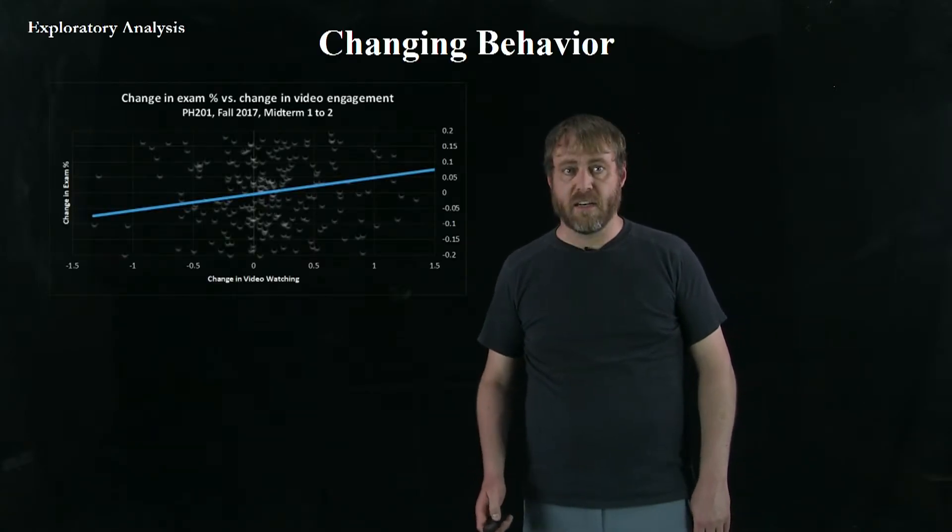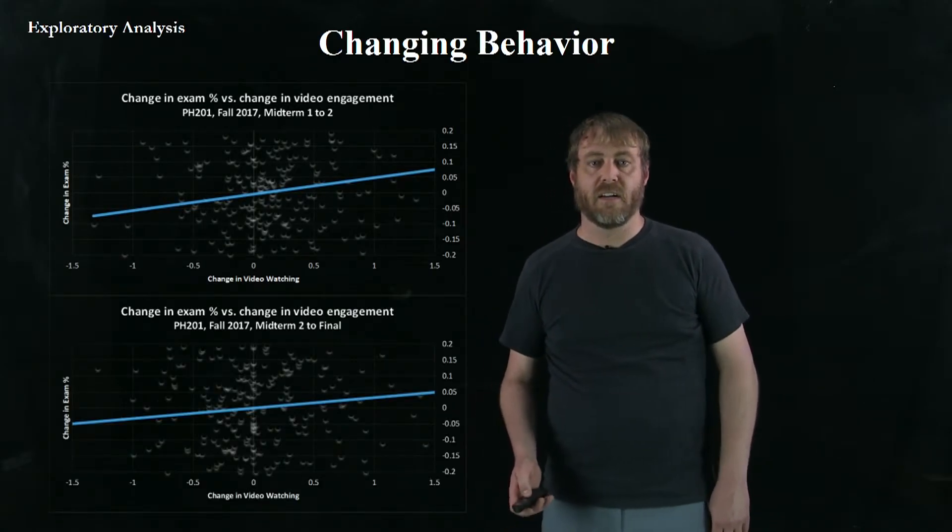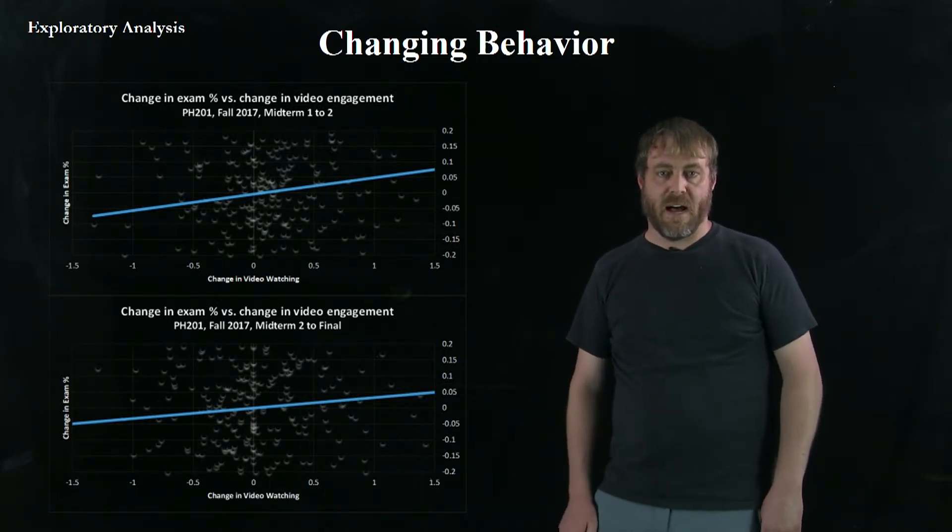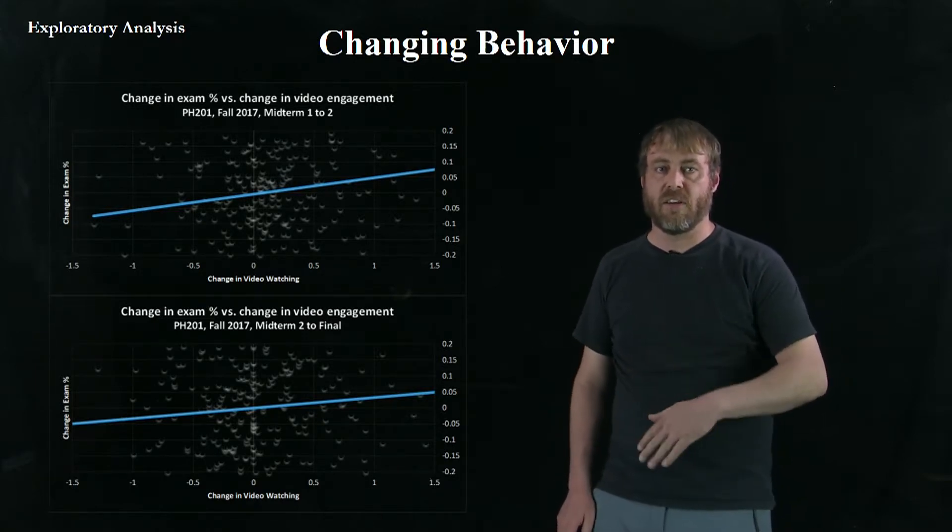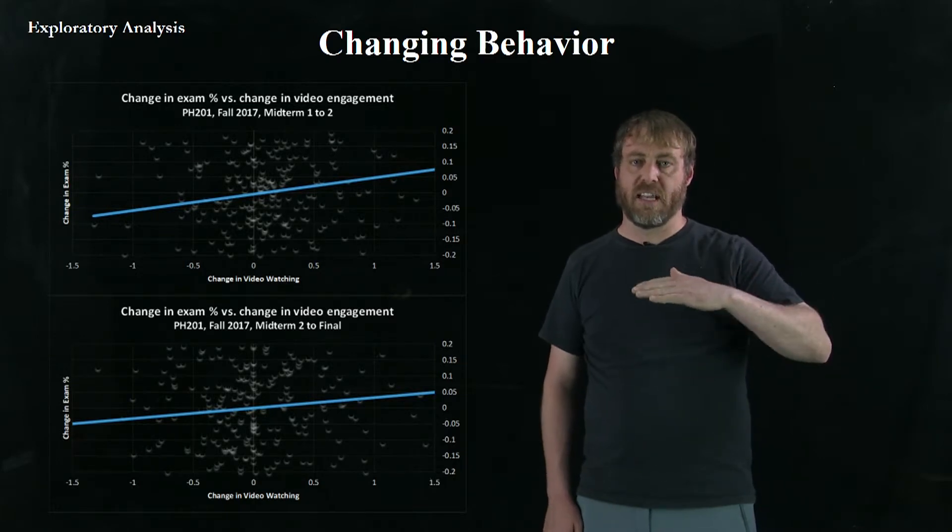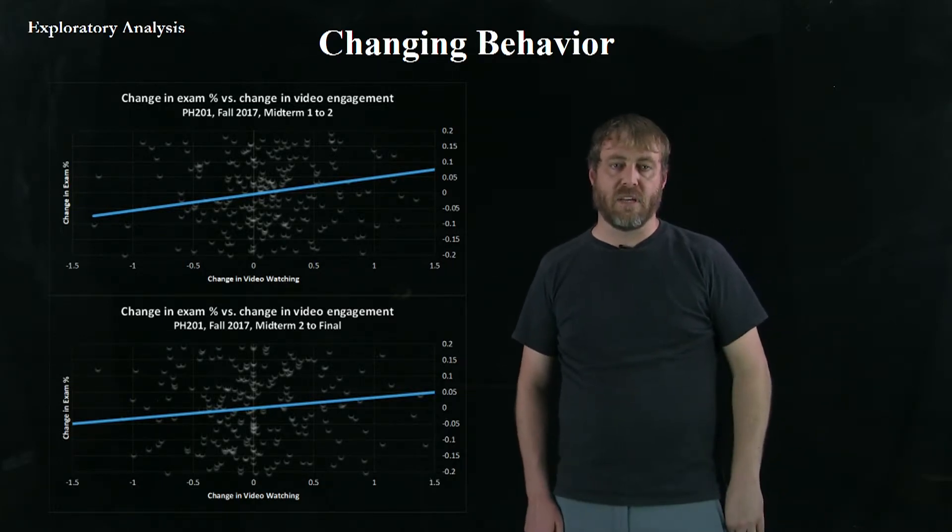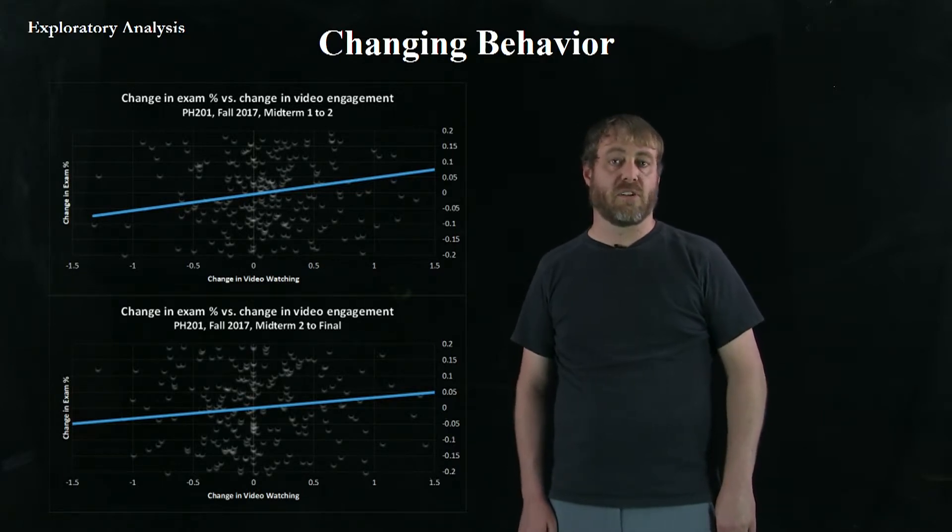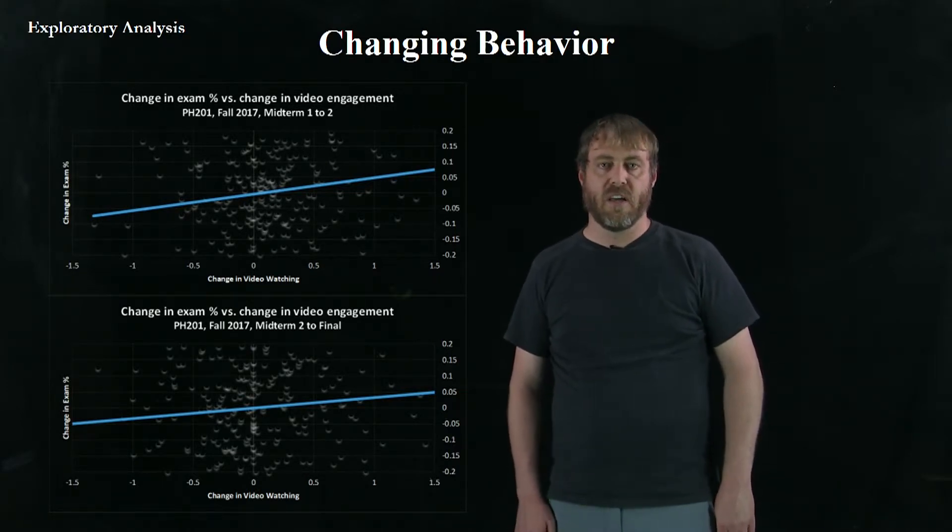If we look at the next time period from midterm two to the final, we still have a positive slope. It's a little less positive. In fact, if we keep doing this throughout the year, it always stays positive. It always is a positive effect of changing your behavior, but the slope gets less and less and less. Meaning that it's not as large of an effect. We suspect that's actually because students are not changing their behavior as much as we go deeper and deeper into the year.